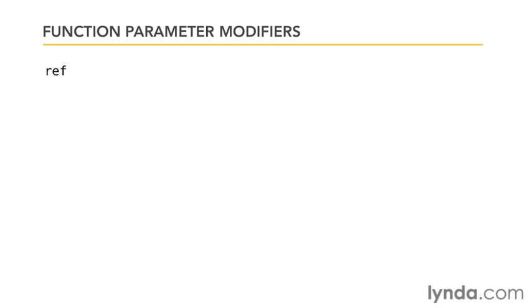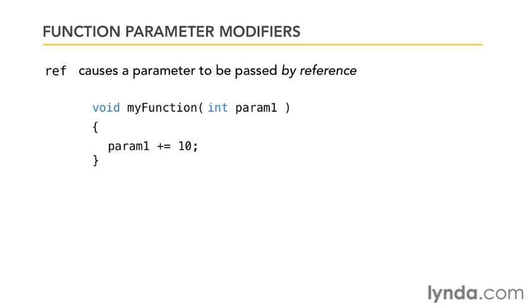However, I can use a keyword in the parameter list for the function called ref. This causes a parameter to be passed by reference instead of having a copy of its value passed in, which is what the normal case is in C#. I would declare my function as normal, I have an integer parameter named param1, but I would put the ref keyword in front of the type name, in this case integer. This causes the param1 parameter to be passed by reference.